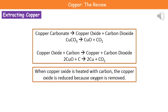Here are a couple of word equations to show you what's actually happening. First of all, if we've got our copper carbonate and we heat it up, we'll generate copper oxide and carbon dioxide through a thermal decomposition reaction. If we then take the copper oxide and heat it with carbon, we're going to make copper and carbon dioxide. So we've extracted that copper in a two-stage process.